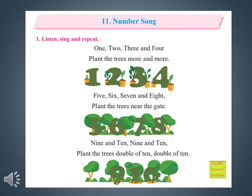5, 6, 7 and 8 — Plant the trees near the gate.